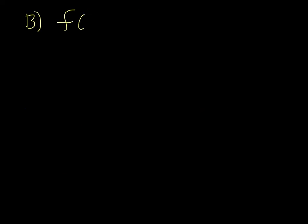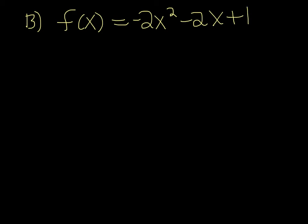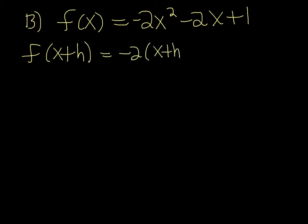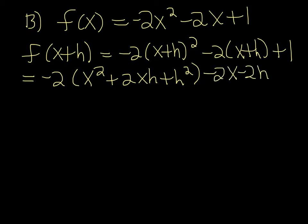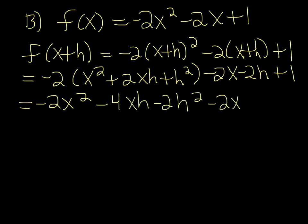Number 13 gives you f of x equal to negative 2x squared minus 2x plus 1, and they want you to find f of x plus h. That's negative 2 times x plus h, squared, minus 2 times x plus h plus 1 — all I've done is substitute x with x plus h. Distributing gives: negative 2x squared minus 4xh minus 2h squared minus 2x minus 2h plus 1. This is the answer to part A.